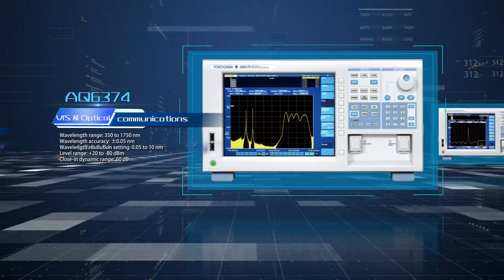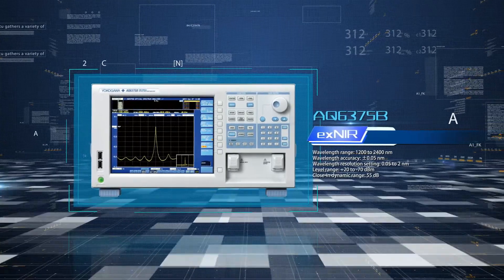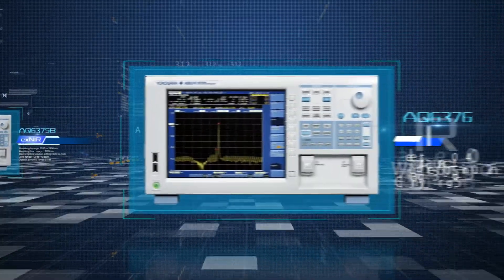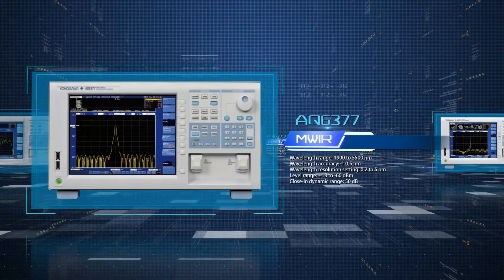Across the six models in the AQ6370 series, Yokogawa covers a broad wavelength range, from the visible light spectrum measured by the AQ6373B, to the mid-wavelength infrared region in which the AQ6377 operates.